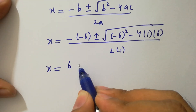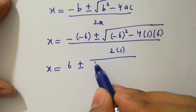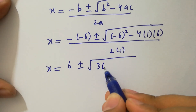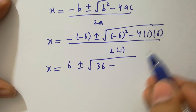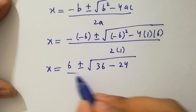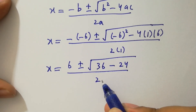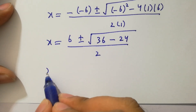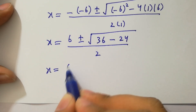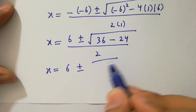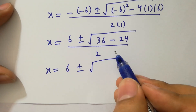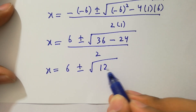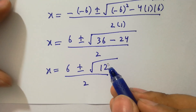So x equal to 6 plus or minus square root of (36 minus 4 times 6) over 2, which gives x equal to 6 plus or minus square root of (36 minus 24) over 2, equal to 6 plus or minus square root of 12 over 2.